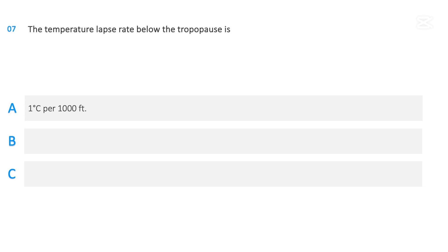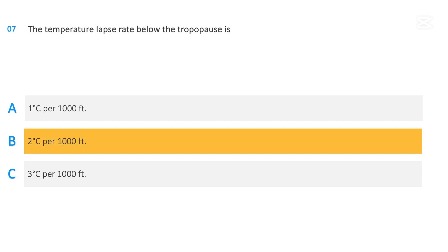The temperature lapse rate below the tropopause is: one degree Celsius per one thousand feet, two degrees Celsius per one thousand feet, or three degrees Celsius per one thousand feet. The correct answer is two degrees Celsius per one thousand feet.